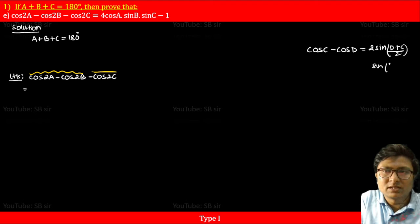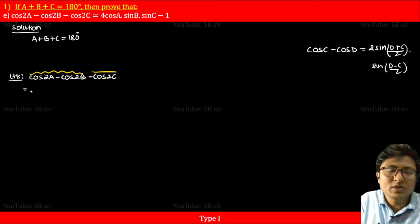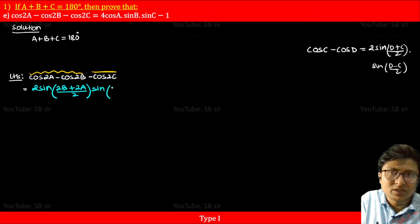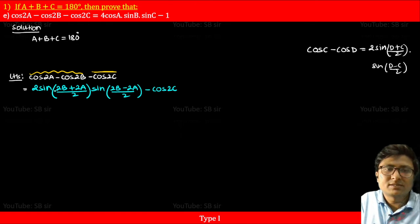The formula is: cos C minus cos D equals 2 sine of (D plus C)/2 times sine of (D minus C)/2. So for cos 2a minus cos 2b, we treat them as C and D, giving us 2 sine of (D plus C)/2 times sine of (D minus C)/2, minus cos 2c.